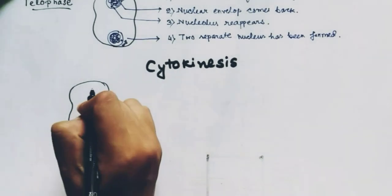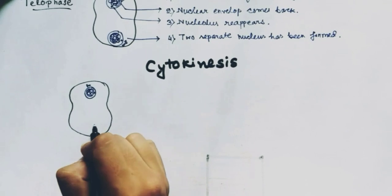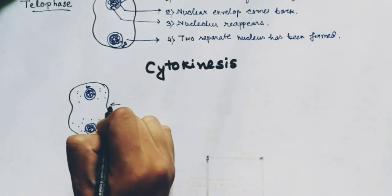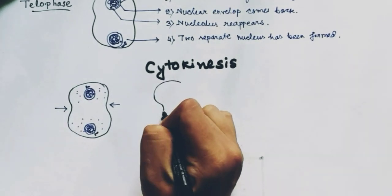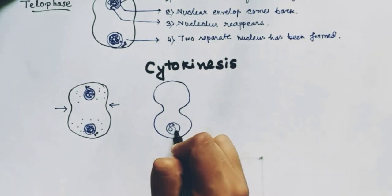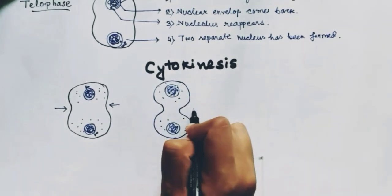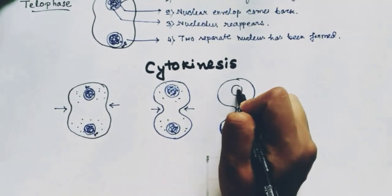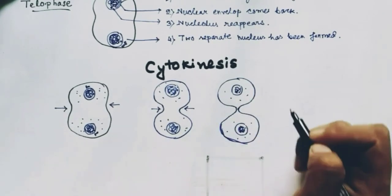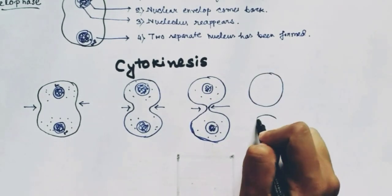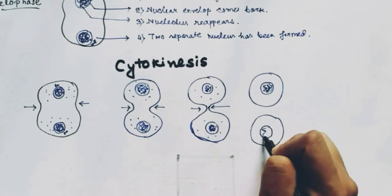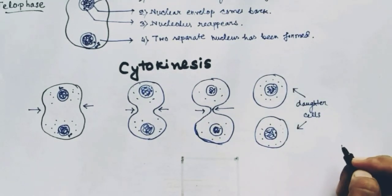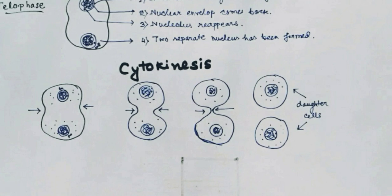Now comes cytokinesis — the cytoplasm division. Cytokinesis starts from the anaphase stage of karyokinesis. The cytoplasm of the dividing cell shows a cleavage furrow at the center, which deepens further during cell division. Eventually the cleavage furrow reaches all the way through and the cytoplasm is pinched off into two different cells, each with a separate nucleus from karyokinesis, forming two complete daughter cells with separate nuclei and separate cytoplasm.